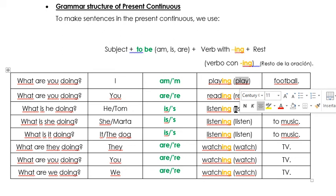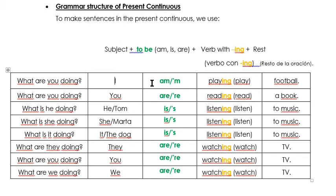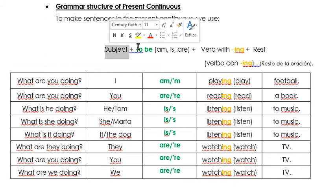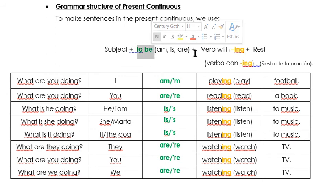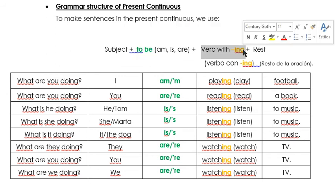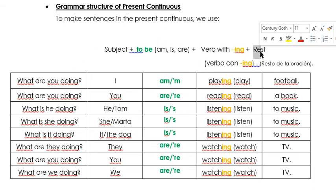For example, here we have 'play' and we have to use it in the Present Continuous — so I am playing. I have to add -ing: I am playing football. You are reading a book. He is listening to music. Marta is listening to music. They are watching TV. We are watching TV. So we have the subject, the verb to be in the affirmative form, plus the verb with -ing, and the rest of the sentence.